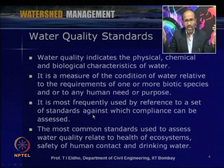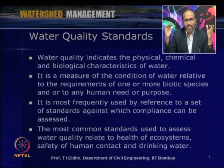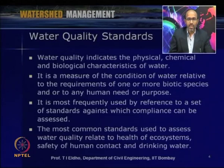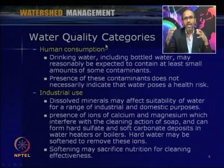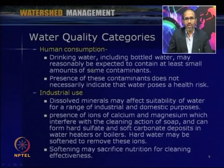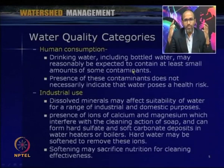We go through various tests and see whether the samples comply with these standards, then accordingly decide whether water can be used for domestic, industrial, agricultural, or various other purposes. When we discuss water quality categories, we can categorize depending upon the usage of water. For human consumption, we are using the water for drinking including bottled water, cooking, and other purposes. The water may reasonably be expected to contain at least small amounts of some contaminants.